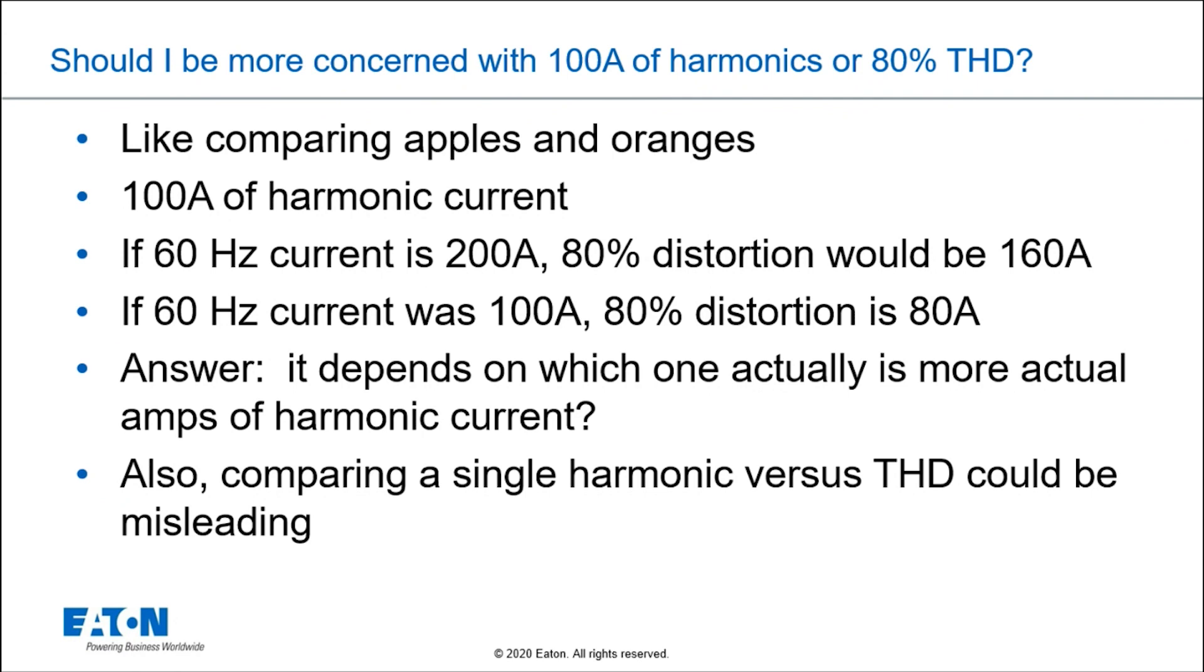If my 60 hertz current was 100 amps, then 80% distortion is 80 amps, and 100 amps would be worse. So really, it depends on which one is actually more actual amps of harmonic current, and that's the key.